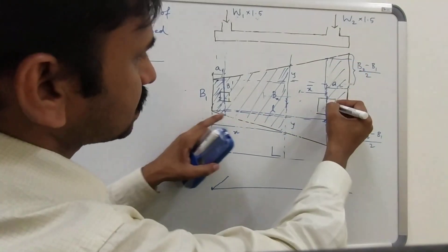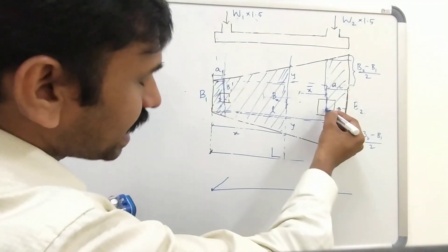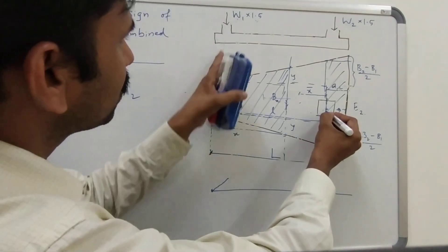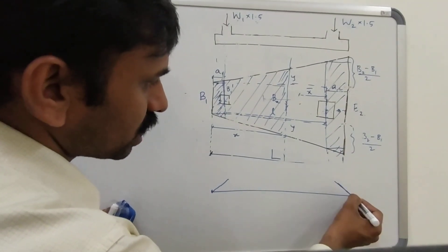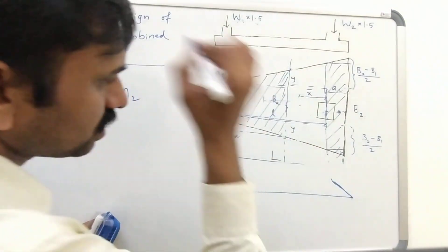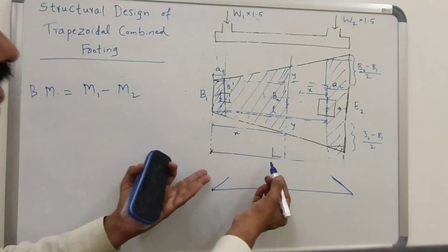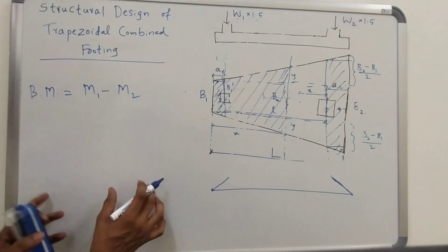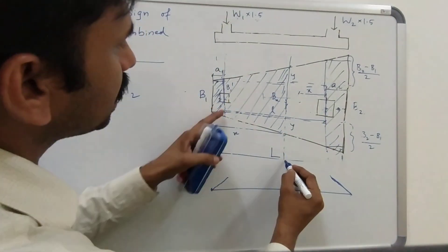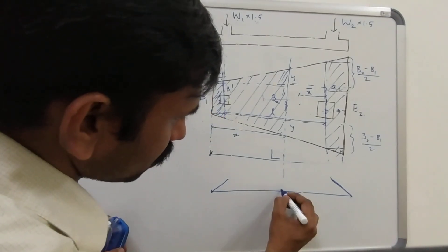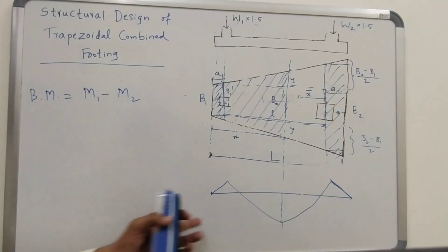This distance is equal to A1 plus L, so you will get the components from the distributed load. Then you have to subtract 1.5 W1 into L from that to get the bending moment component. The total bending moment at this point, where your shear force is becoming 0, is calculated using capital X. You can calculate your bending moment by equating small x to capital X minus 1.5 W1 into the distance, that is capital X minus A1, to get the total hogging bending moment. This gives you your bending moment diagram.